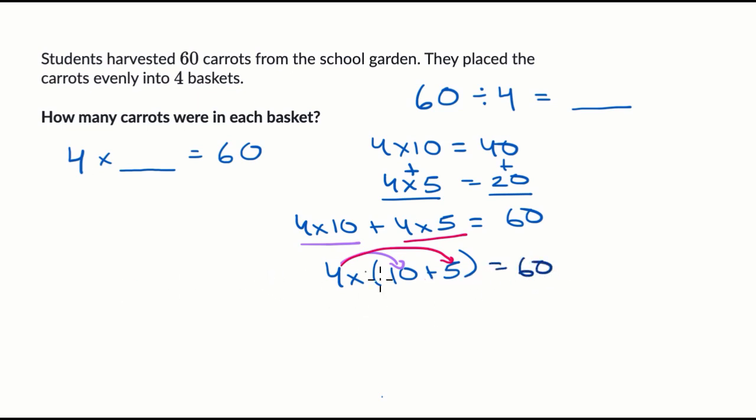And I think you see where this might be going. What is 10 plus 5? 10 plus 5 is 15. So we just figured out that 4 times 15 is equal to 60.